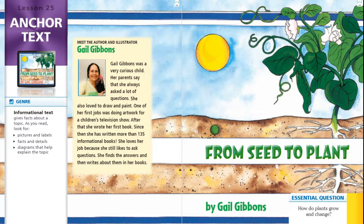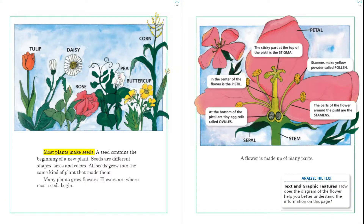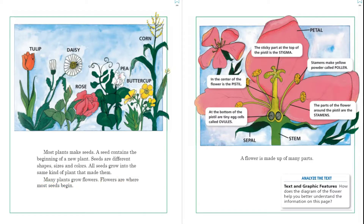Let's begin. Most plants make seeds. A seed contains the beginning of a new plant. Seeds are different shapes, sizes, and colors. All seeds grow into the same kind of plant that made them. Many plants grow flowers. Flowers are where most seeds begin. On this page we can see lots of different kinds of flowers — tulip, daisy, rose, pea, corn, and buttercup.